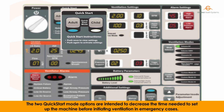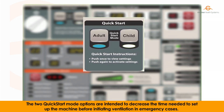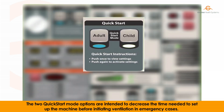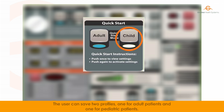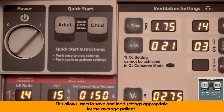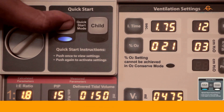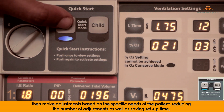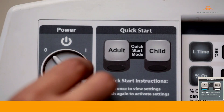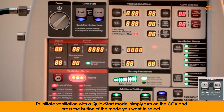The two Quick Start Mode options are intended to decrease the time needed to set up the machine before initiating ventilation in emergency cases. The user can save two profiles: one for adult patients and one for pediatric patients. This allows users to save and load settings appropriate for the average patient, then make adjustments based on the specific needs of the patient, reducing the number of adjustments and saving setup time.